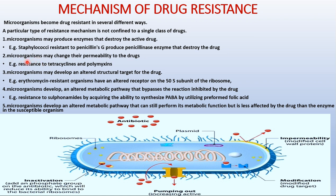Mechanism number two: microorganisms may change their permeability to drugs, meaning they won't allow antibiotics inside their cells. Microorganisms may cease active uptake of certain drugs. Examples include resistance to tetracyclines and polymyxins.